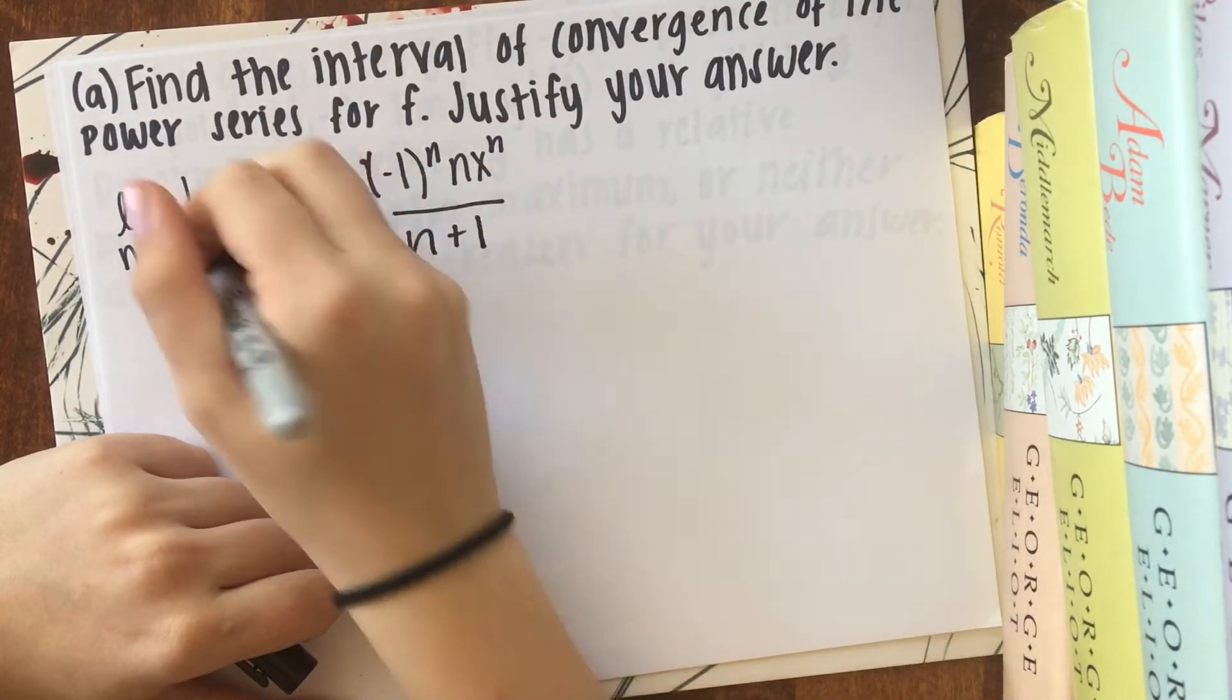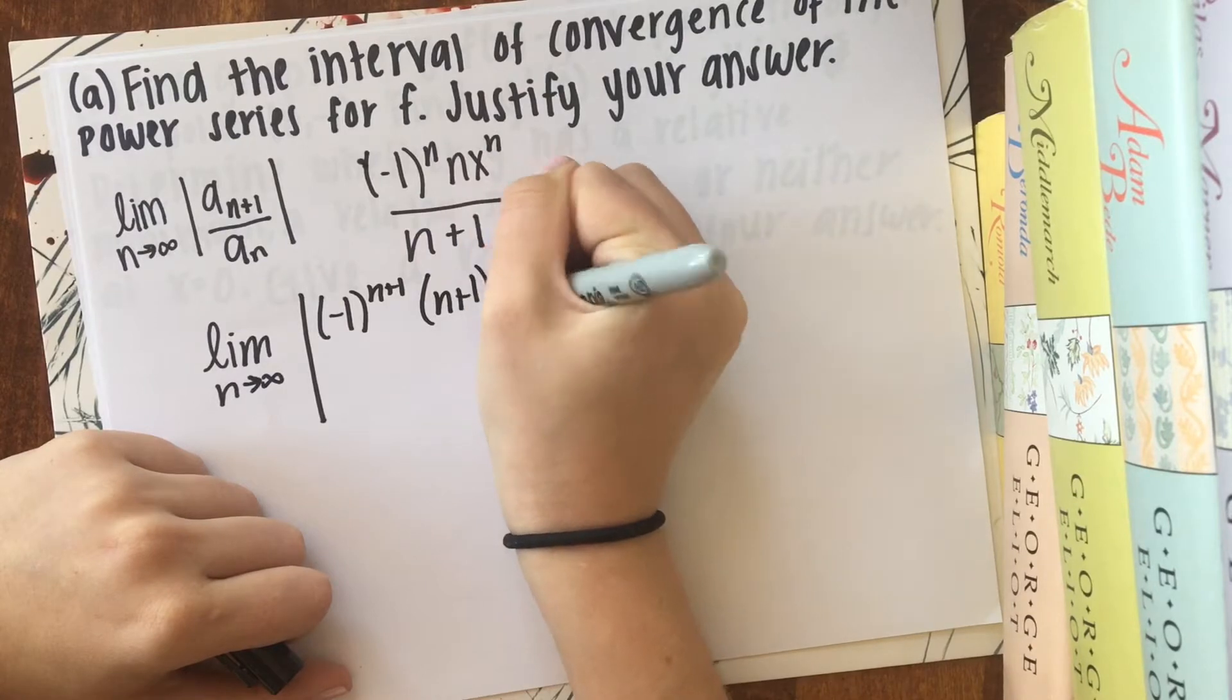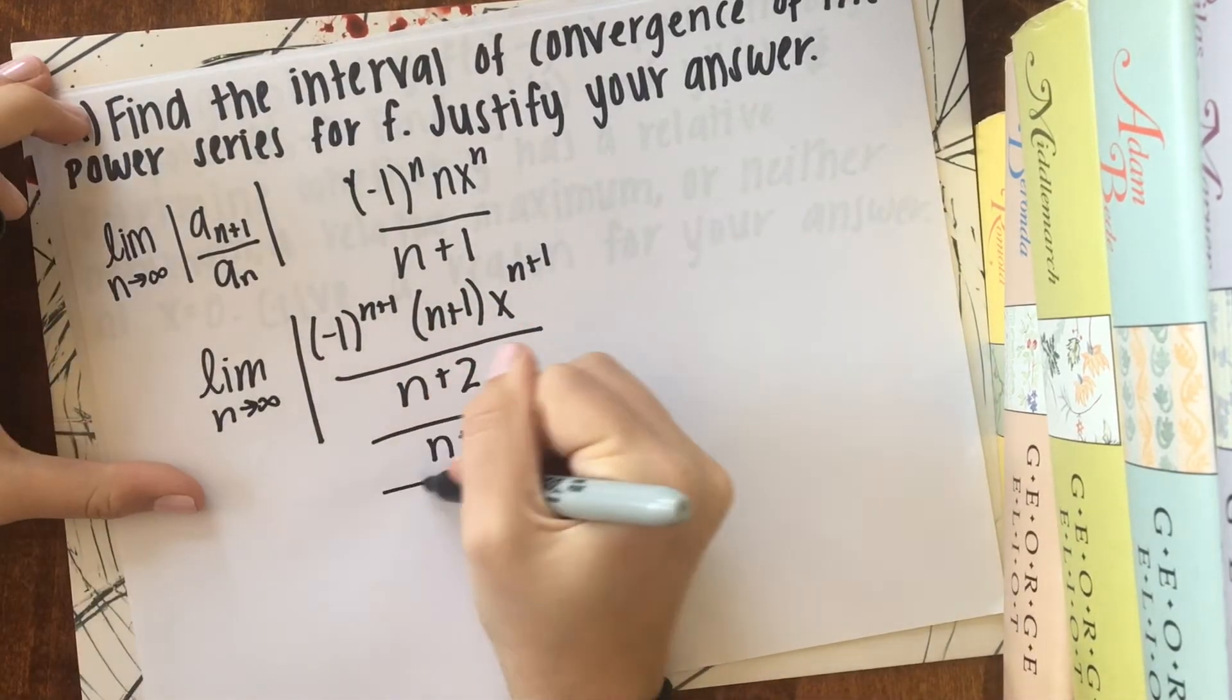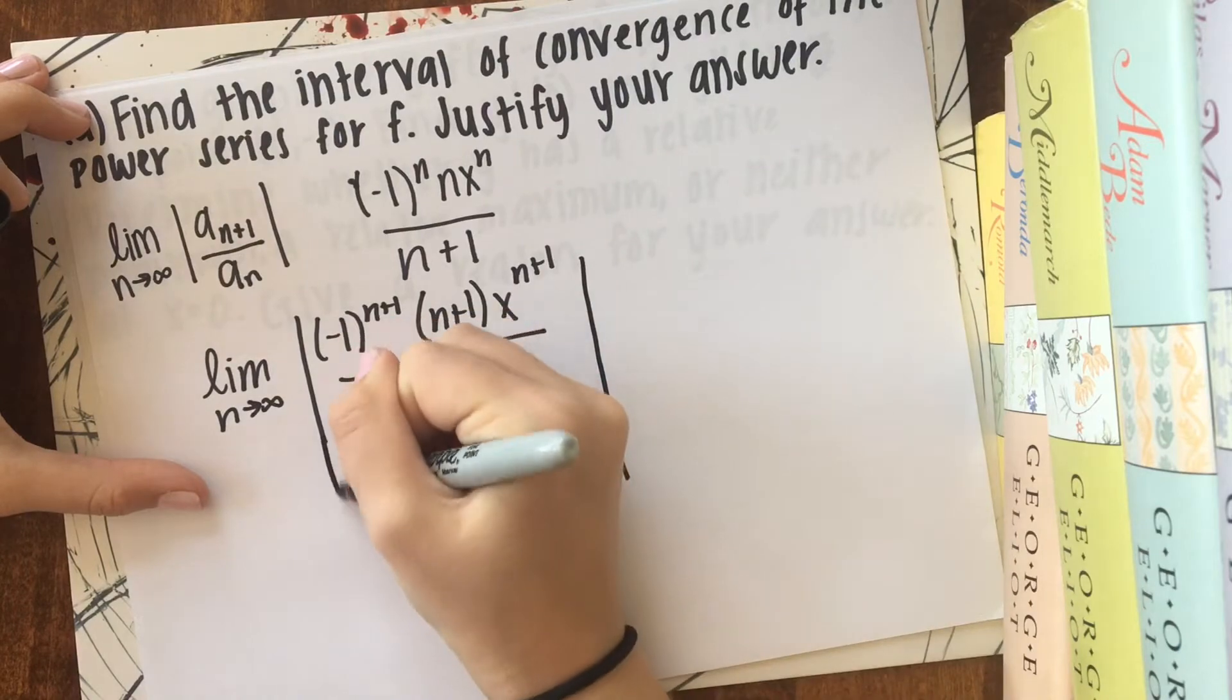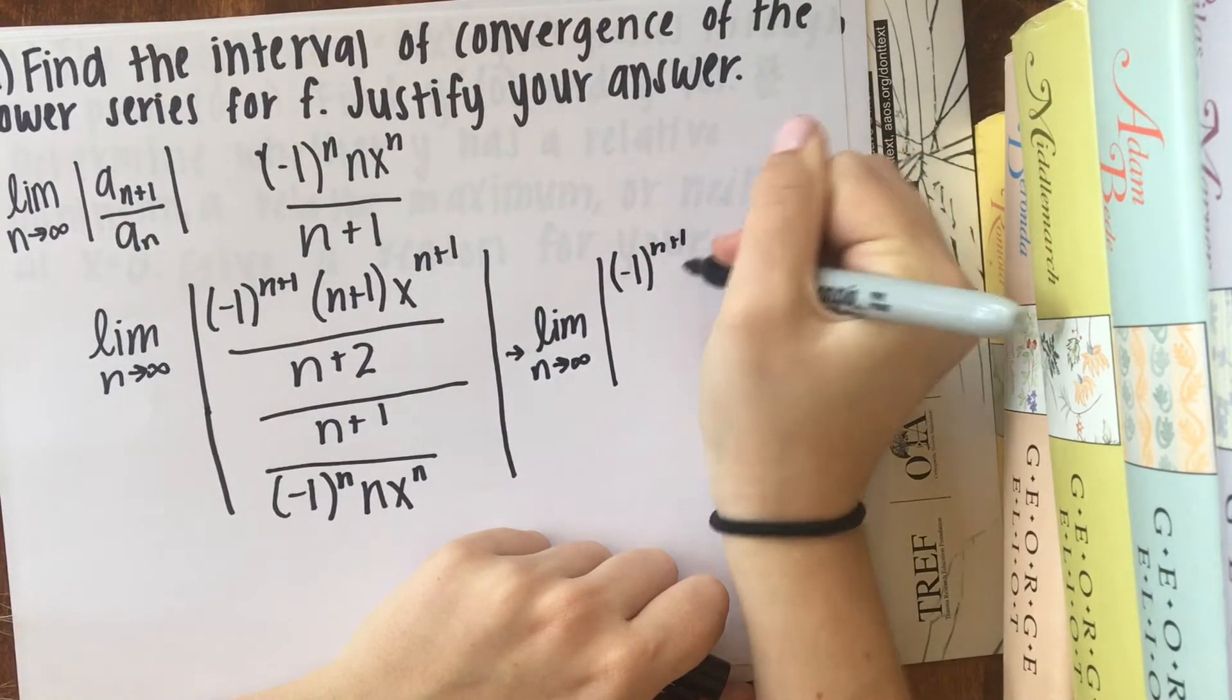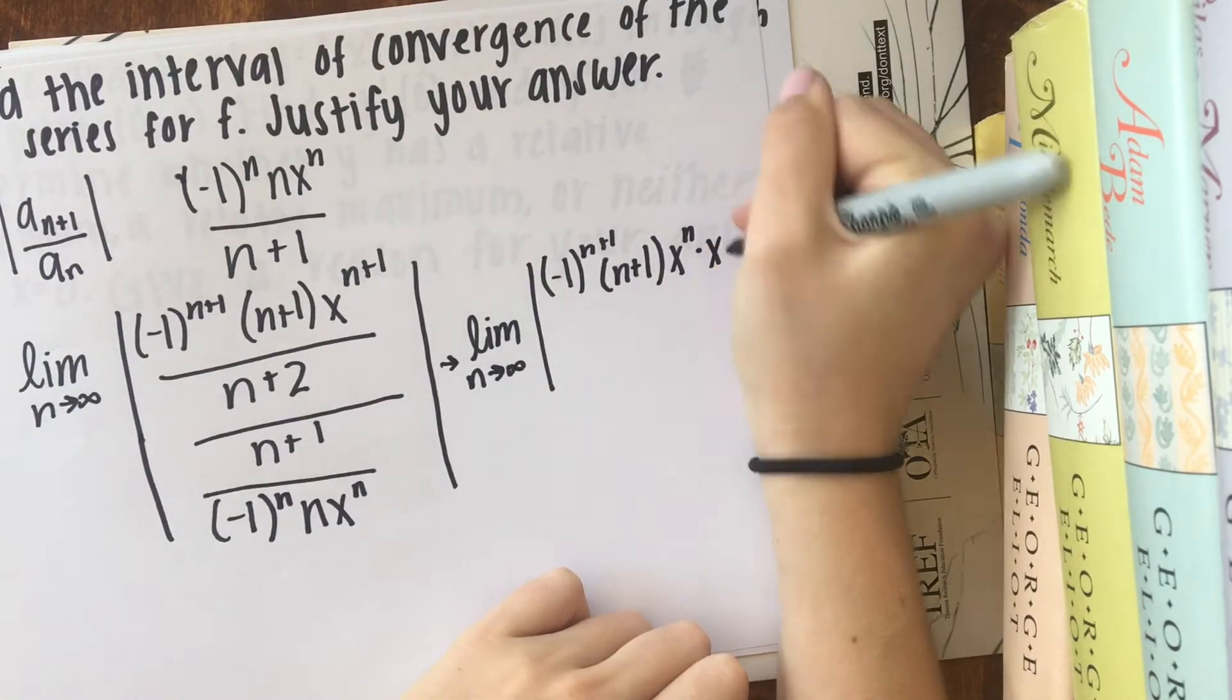So now I'm just going to fill this ratio. And this is going to be divided by. So just to make this look a little bit better, I'm going to rewrite it. And x to the n plus 1 is the same thing as x to the n times x, so I'm just going to write it like that so it's easier.